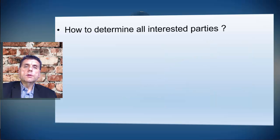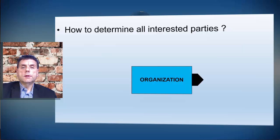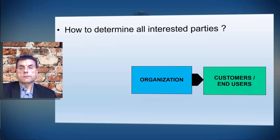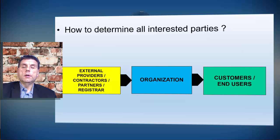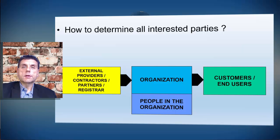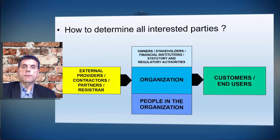How do we determine all interested parties? What are interested parties? The organization itself, then our output — our customers or end users; input to our organization — external providers, suppliers, vendors, contractors, partners; our registrar for certification; and the people in our organization — that's a very important interested party.